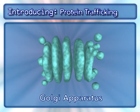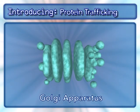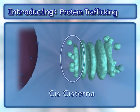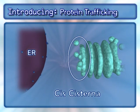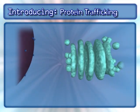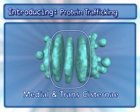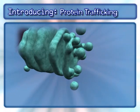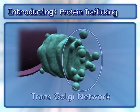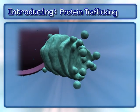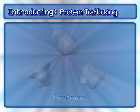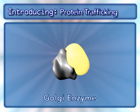The Golgi apparatus consists of general components: the cis-cisterna nearest the endoplasmic reticulum or ER, the medial and trans-cisternae, and the trans-Golgi network. Other key players in this process are the proteins being transported and the enzymes that modify them.